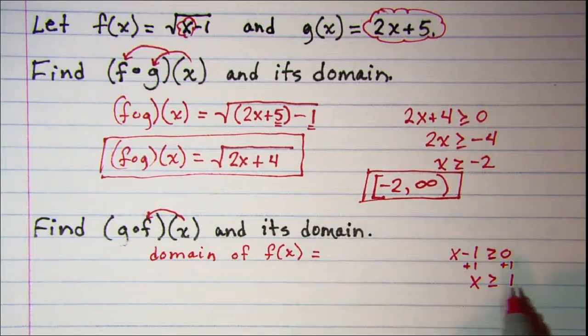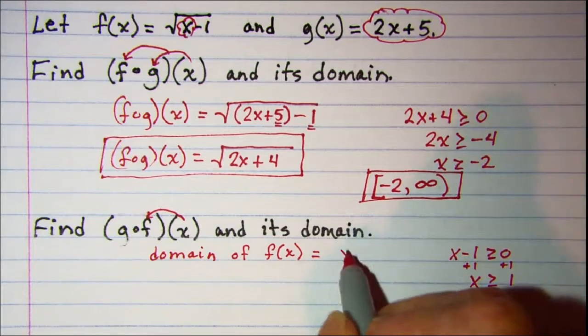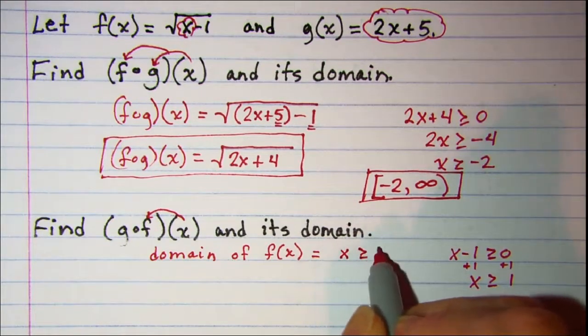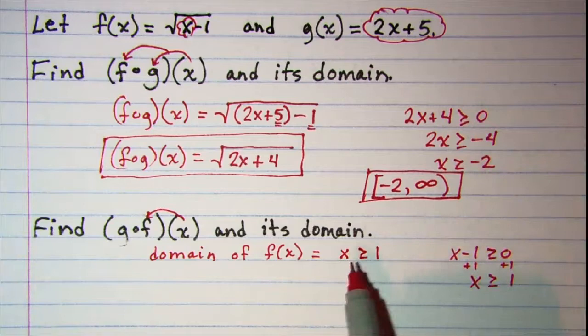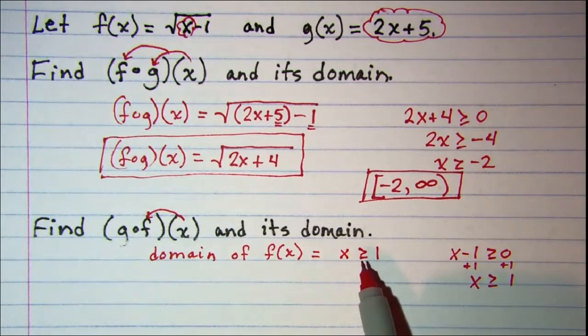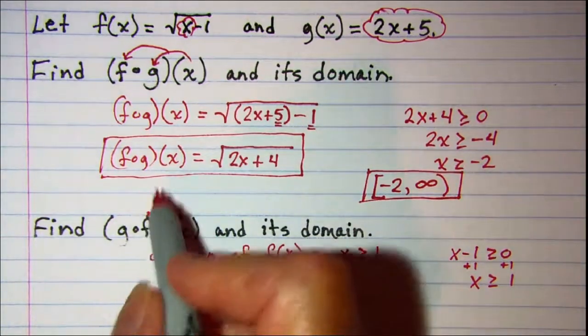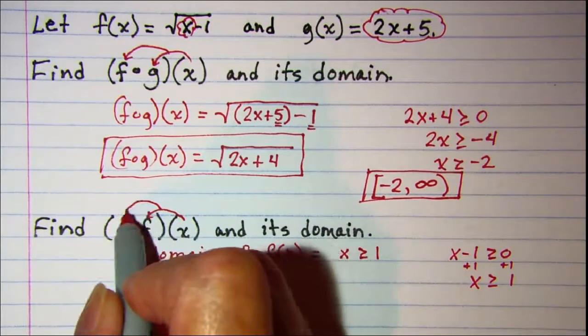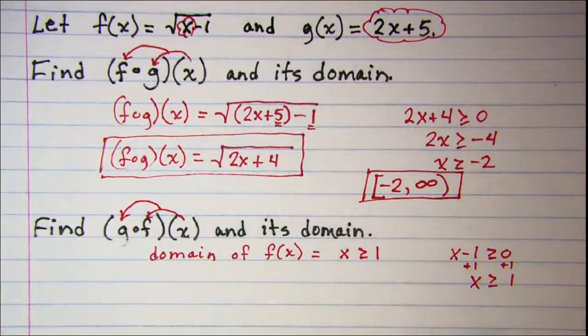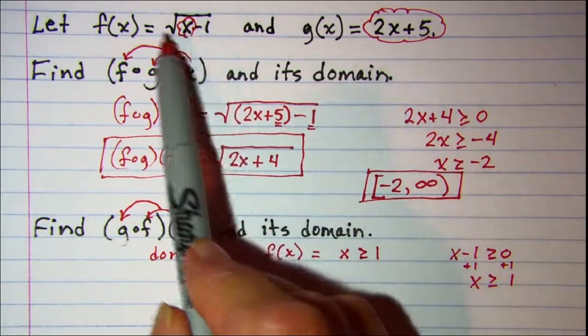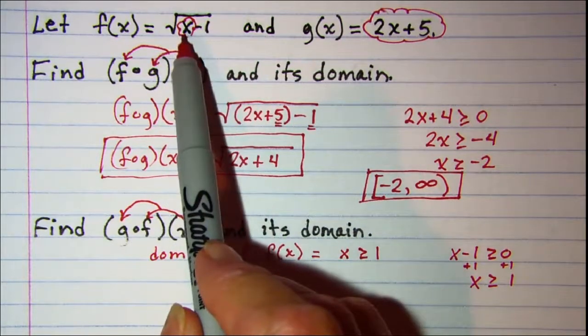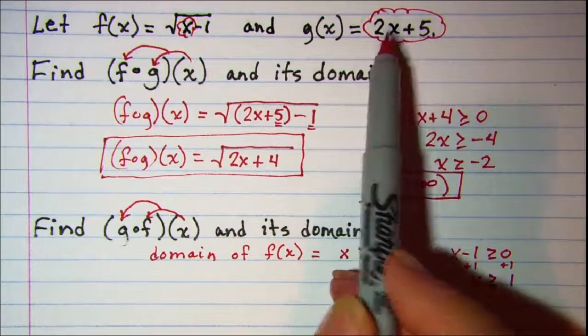So the domain of f(x) is x is greater than or equal to 1 and I'll wait and put that in interval notation in a minute. Then for our composition function we're going to put f(x) into g, so we're going to put this radical function into this linear function.